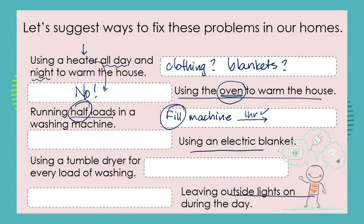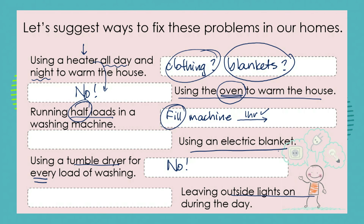Using an electric blanket — it's so lovely to climb into bed when the electric blanket is on, but what about simply using extra blankets and wearing nice fluffy pajamas that are going to warm you up? Using a tumble dryer for every load of washing — we need to think about the wonderful sunshine we have here in South Africa. On the days when we have good sunshine, we need to hang out our washing and only reserve a tumble dryer for when it is raining outside. Leaving outside security lights on during the day is another big no — switch off lights not only in areas where they are not needed, but during the day as well.